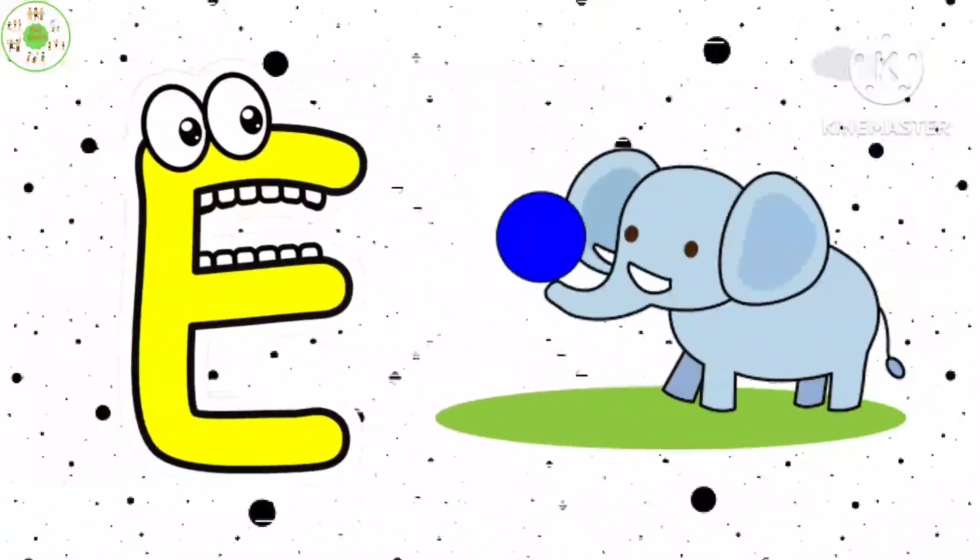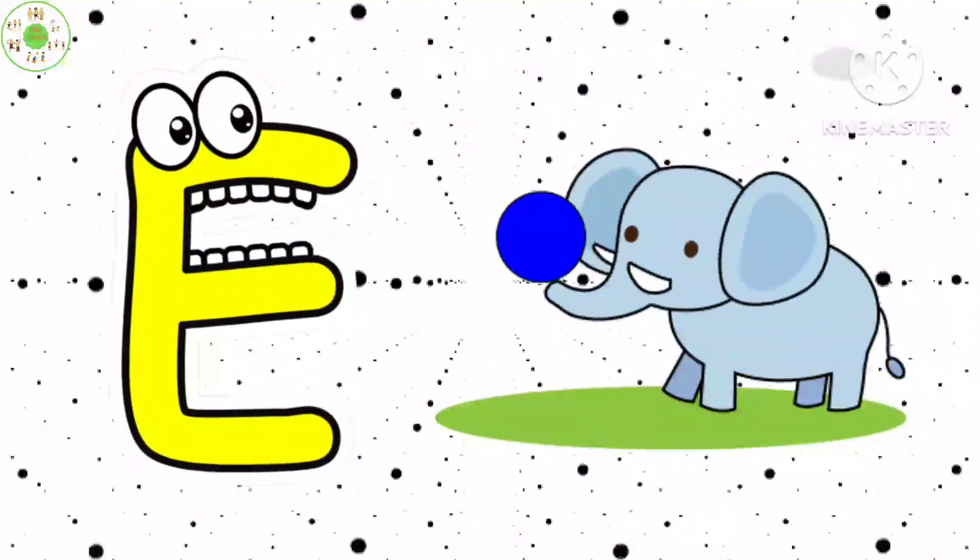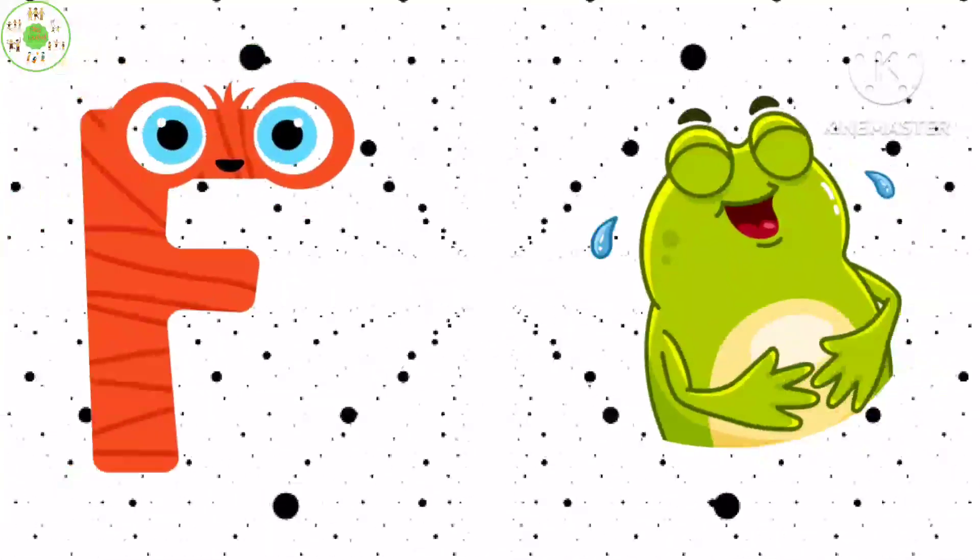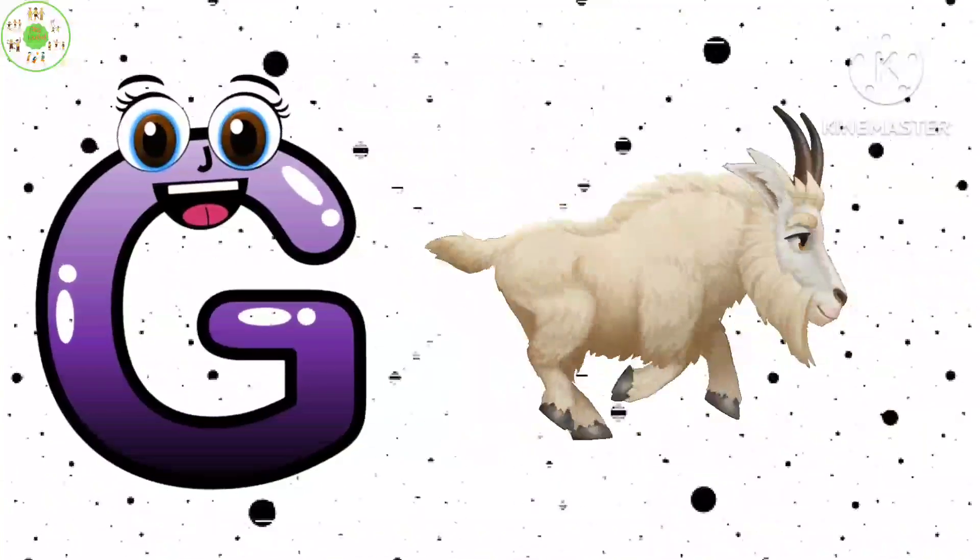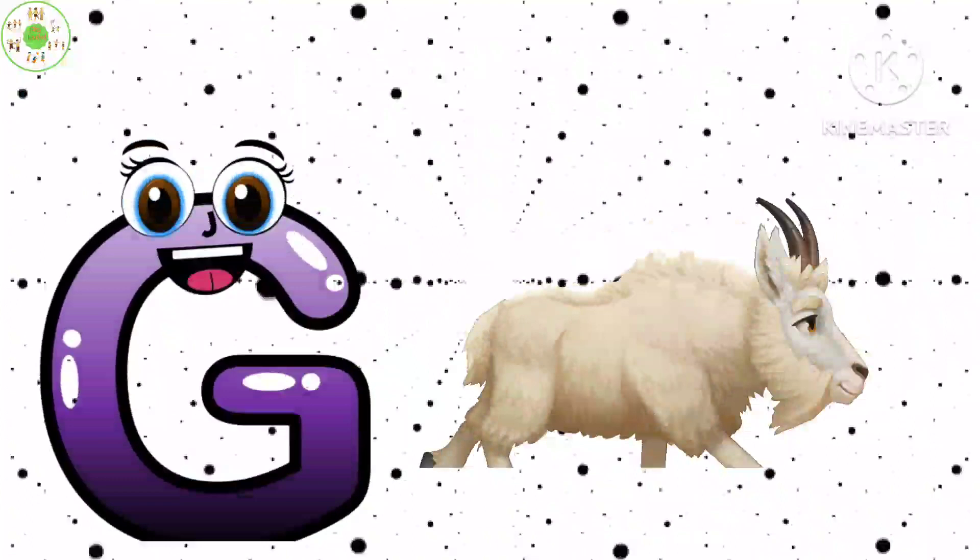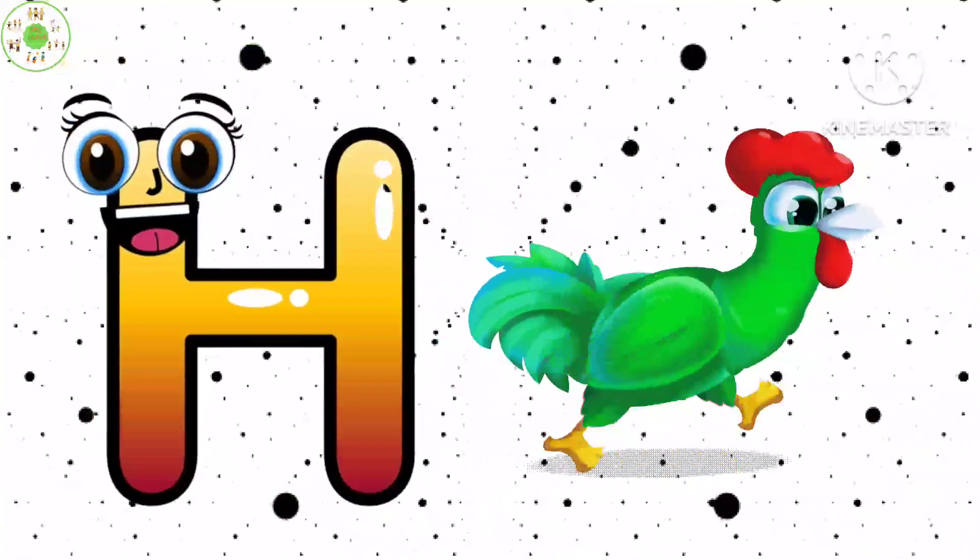E is for Elephant, E-E-Elephant. F is for Frog, F-F-Frog. G is for Goat, G-G-Goat. H is for Hand, H-H-H-Hand.